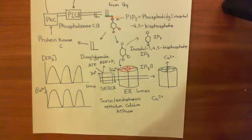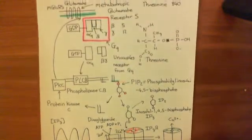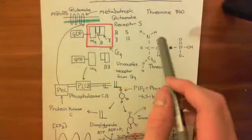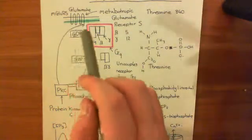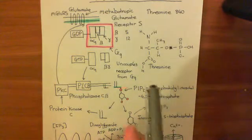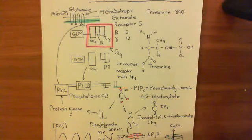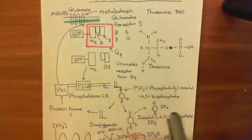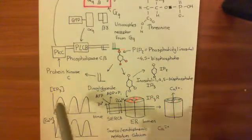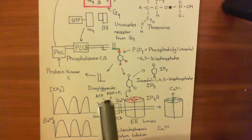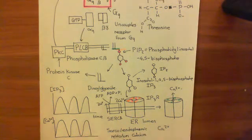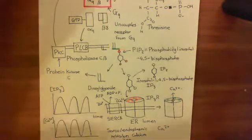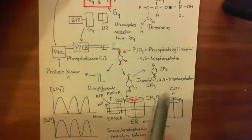This mechanism is controversial — the jury is still out on whether it really happens. Initially, when threonine 840 and the PKC phosphorylation mechanism were found, it seemed like a clear explanation for calcium oscillations in response to mGluR5. But then someone expressed mGluR5 in HEK cells — human embryonic kidney cells — and when they tried to measure IP3 fluctuations, the data was quite unconvincing. You do see oscillations, but they're tiny. So the jury's still out on whether this exists, but it is a nice model at least.